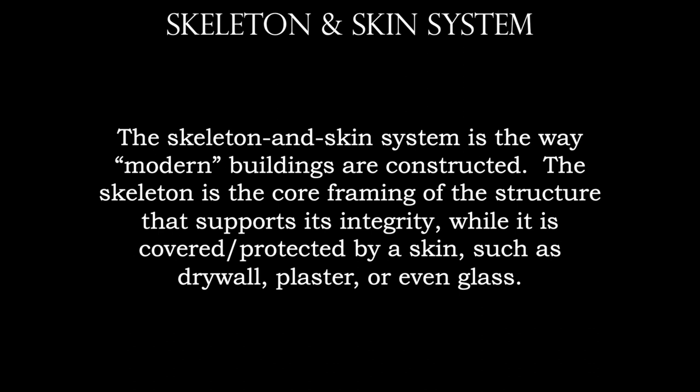Now with the skeleton and skin system, that's the way modern buildings are constructed. The skeleton and skin system is where we have a solid core framing. This can be wood for most houses, or it could be gigantic I-beams for skyscrapers. That's the core framing material — it's going to support the integrity of the building. And then it's going to be covered by a protective skin, which is usually drywall, plaster, aluminum siding, or glass.